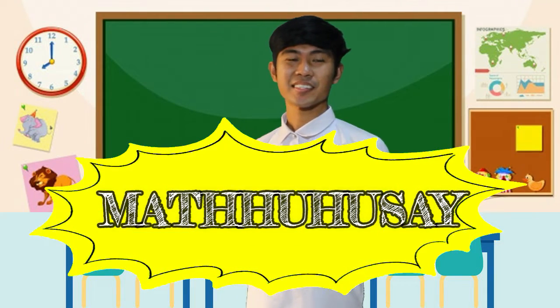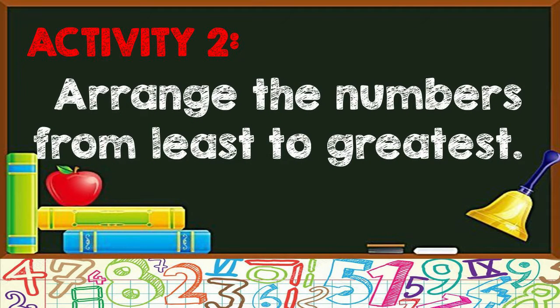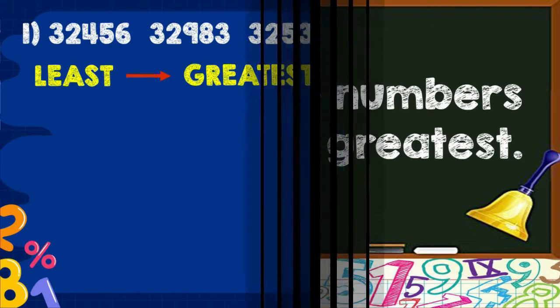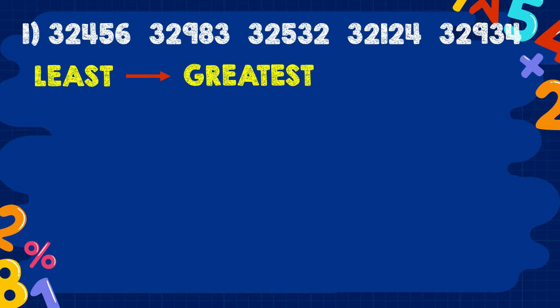Did you get all the correct answers? Did you arrange the given numbers from greatest to least? Very good! Excellent! Now, Activity 2: arrange the following set of numbers from least to greatest. I'll give you 15 seconds to answer per set. Number 1: 32,456; 32,983; 32,532; 32,124; 32,934.